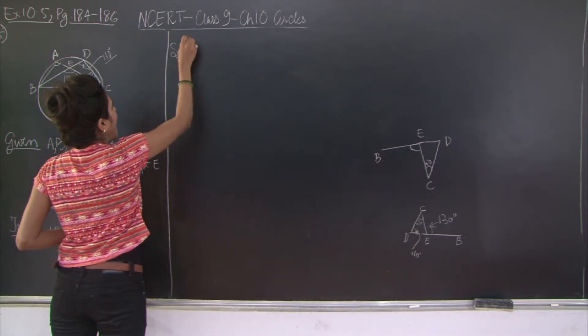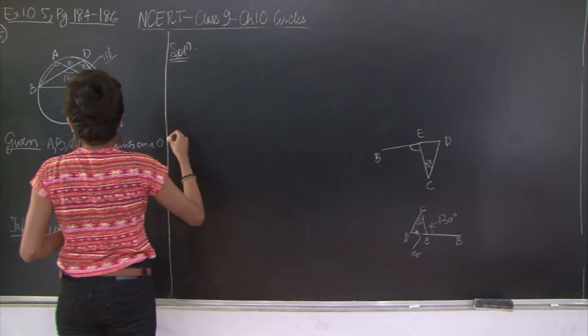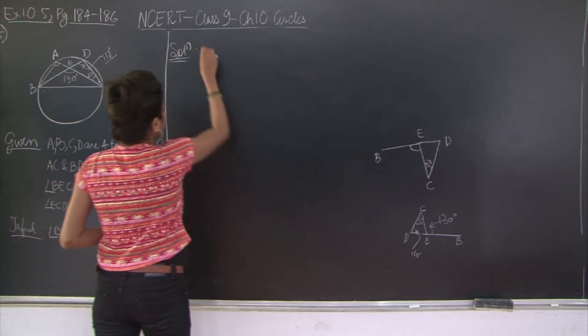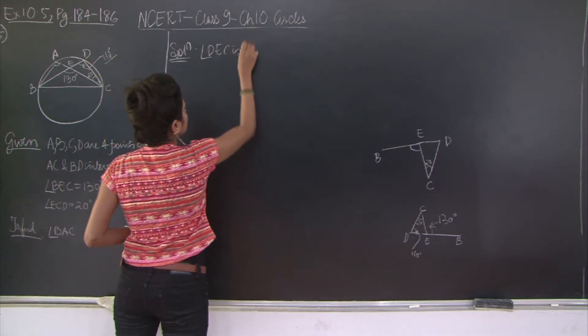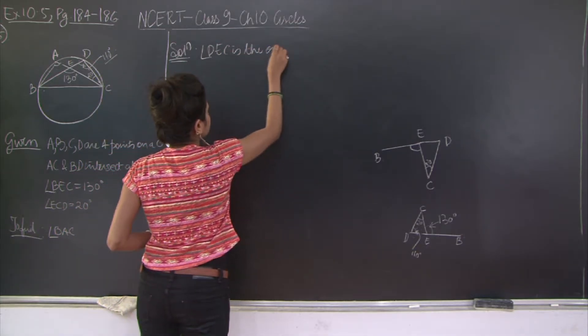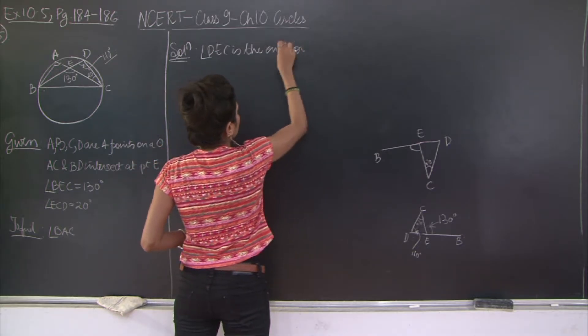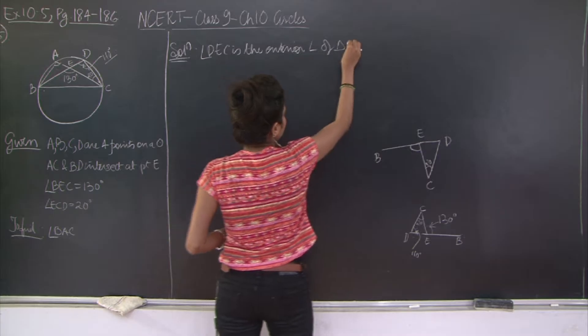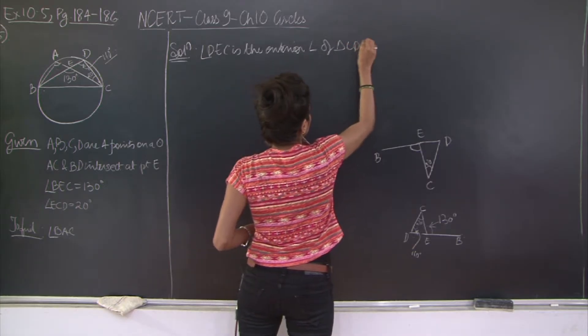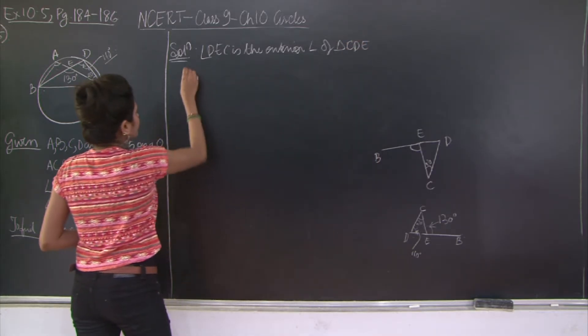Let's go ahead and write the question and write the solution. So angle DEC is the exterior angle of triangle CDE.